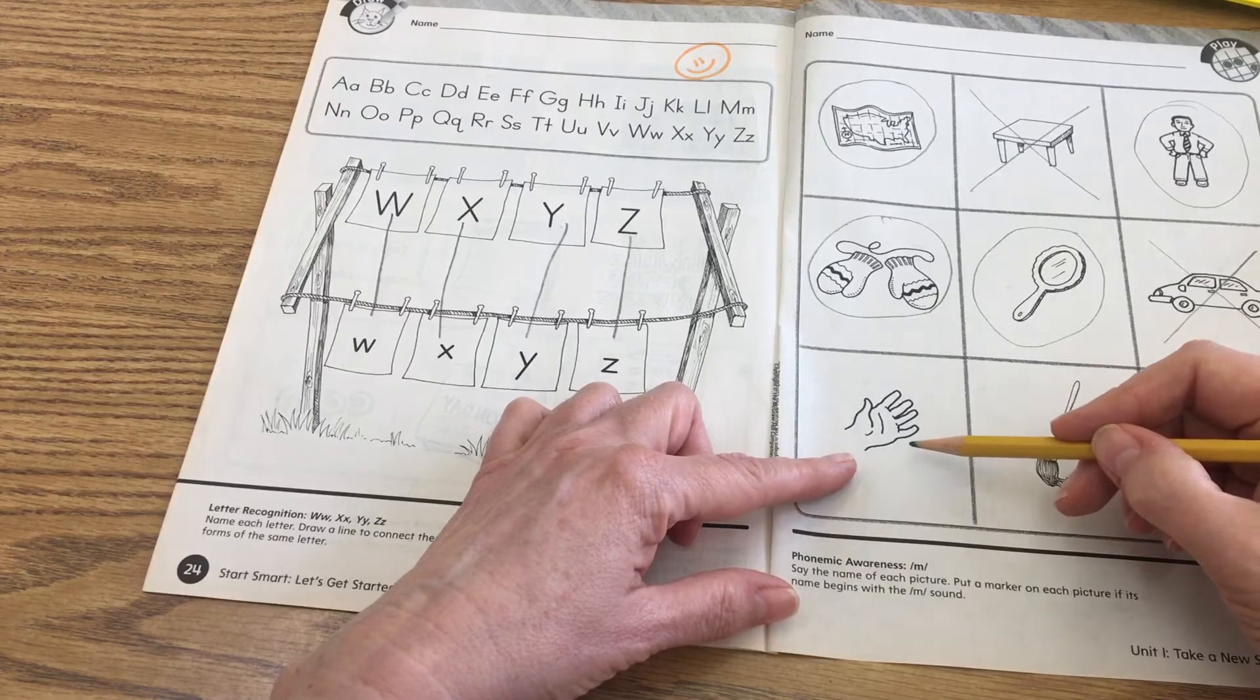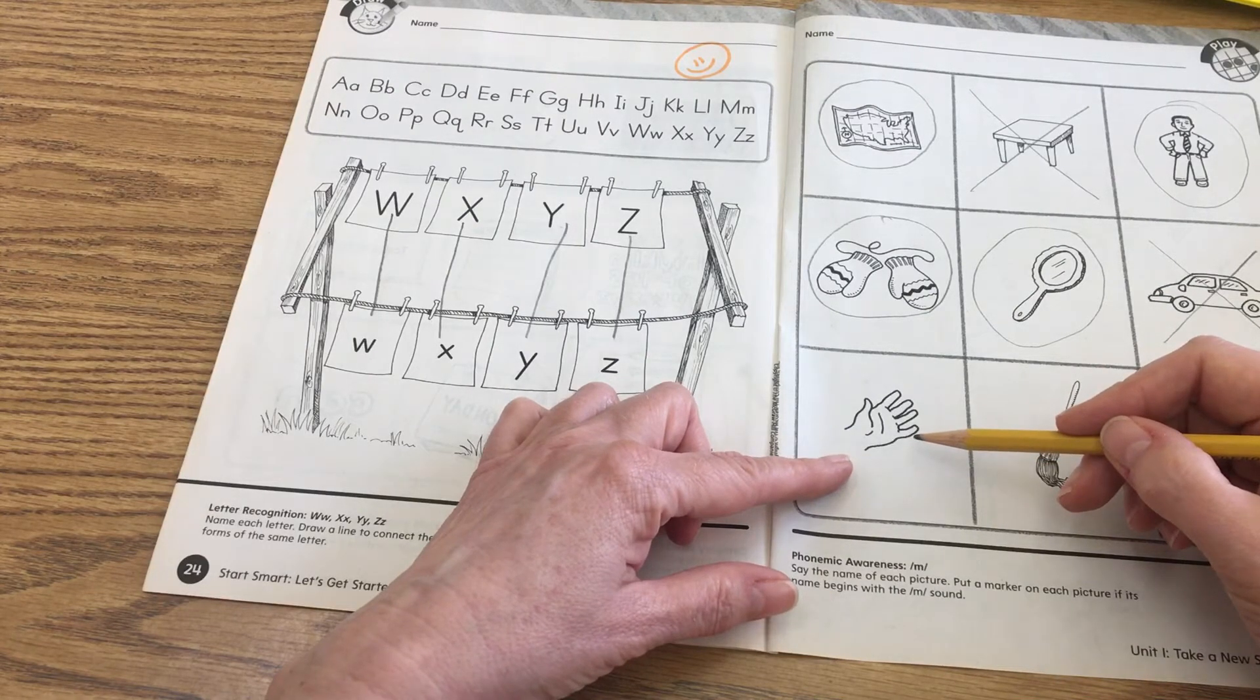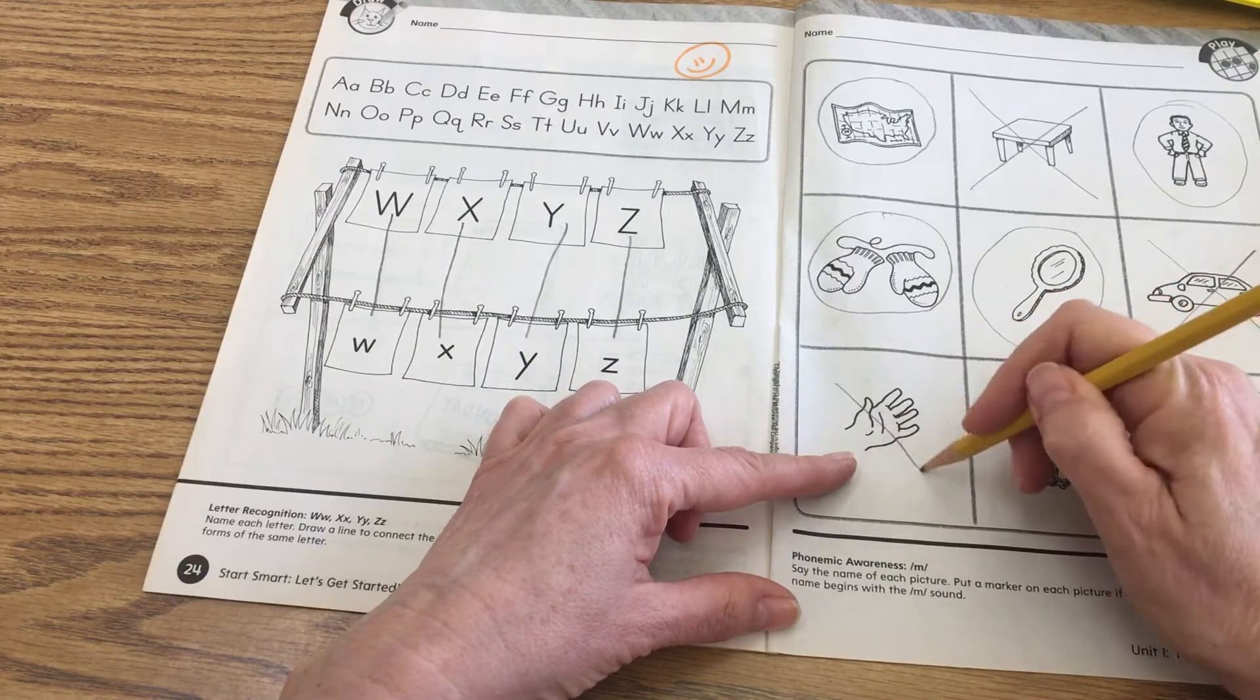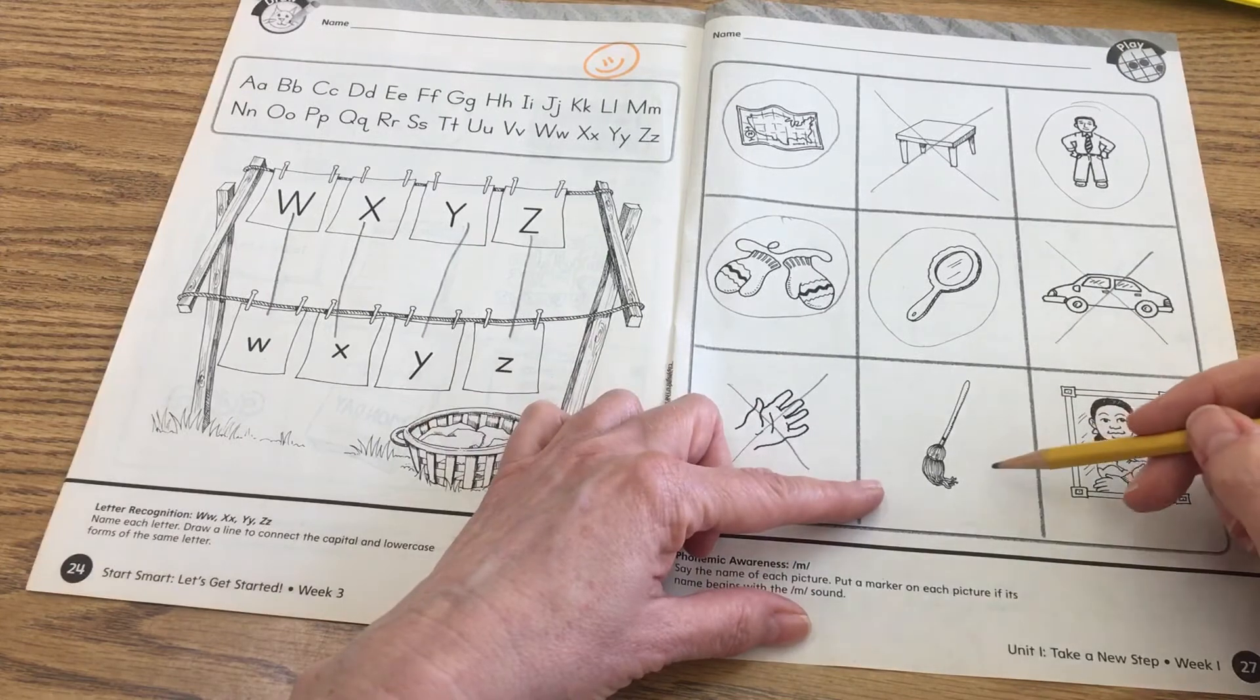Say hand. Hand. Monkey. Hand. So it'd have to be a, a mand, a mand, and it's not called a mand, if it began with the mmm sound.